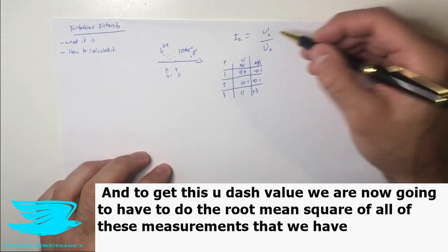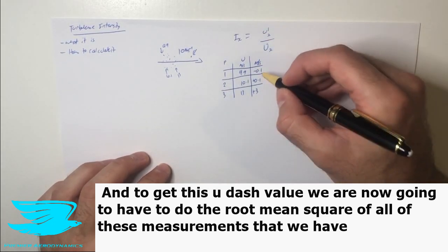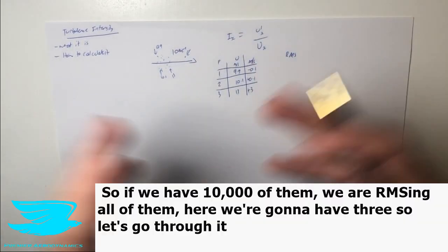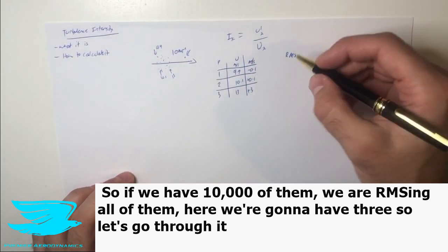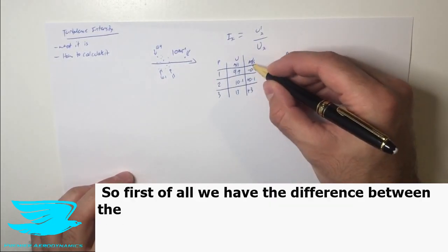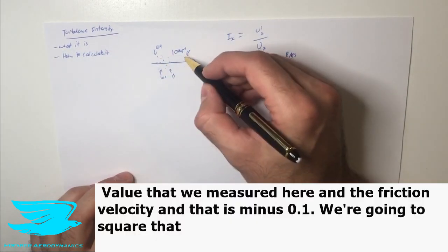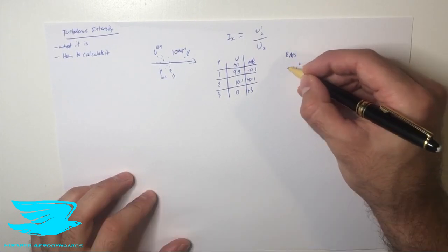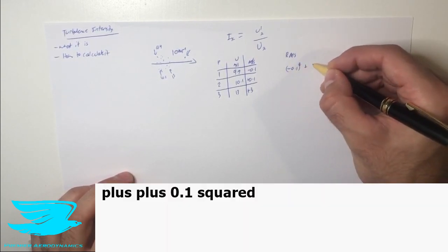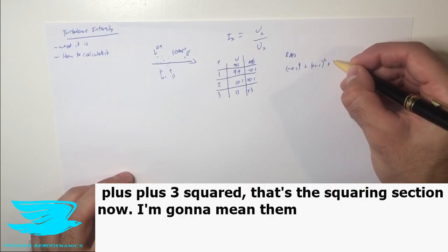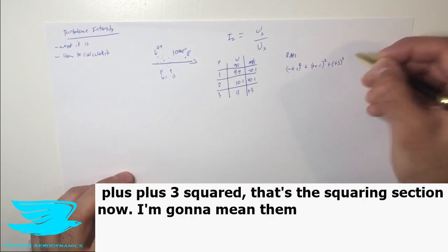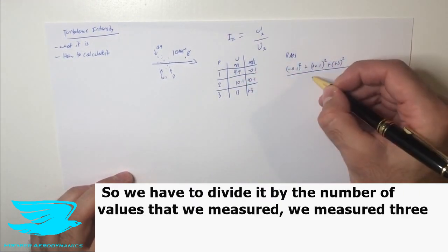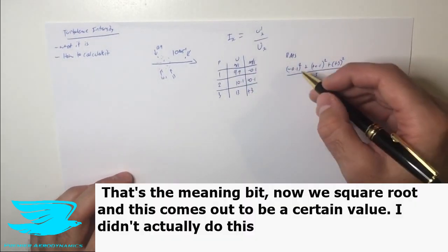And to get this u dash value, we are now going to have to do the root mean square of all of these measurements that we have. So we have 10,000 of them. We RMS all of them. Here, we only have three. So let's go through it. So first of all, we have the difference between the value that we measured here and the freestream velocity. And that is minus 0.1. We're going to square that plus 0.1 squared, plus 3 squared. That's the squaring section.